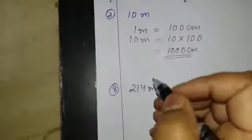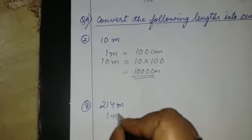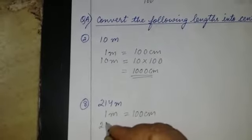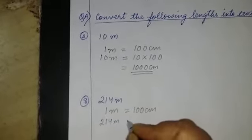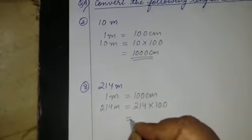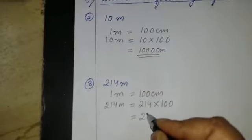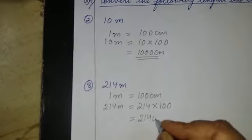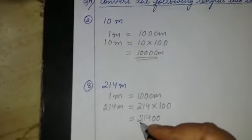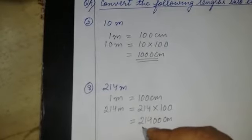Next question: 214 meter. Again we write the formula first — 1 meter is equal to 100 centimeter, therefore 214 meter is equal to 214 × 100. You add two zeros after 214, so it will be 21400 centimeter.